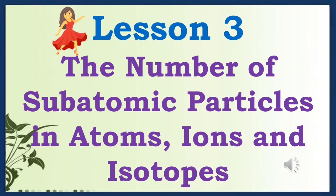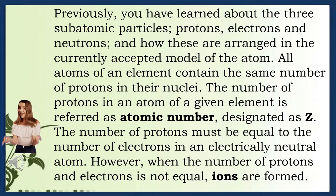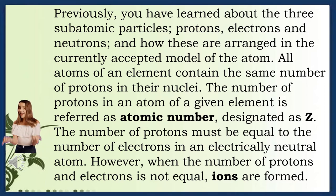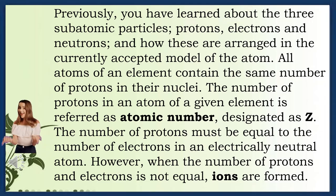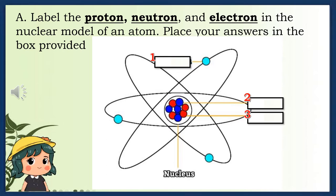Lesson 3: The Number of Subatomic Particles in Atoms, Ions and Isotopes. You have learned about the three subatomic particles — protons, electrons, and neutrons — and how these are arranged in the currently accepted model of the atom. All atoms of an element contain the same number of protons in their nuclei. The number of protons in an atom is referred to as atomic number, designated as Z. Label the proton, neutron, and electron in the nuclear model of an atom. The answers are: 1-electron, 2-proton, 3-neutron.